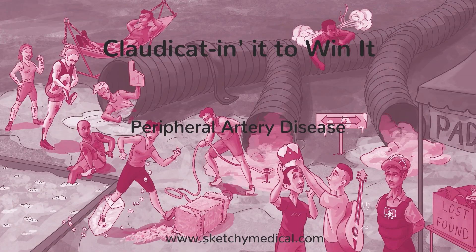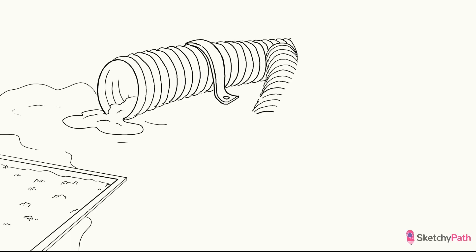In the last sketch, we covered atherosclerotic disease of the aorta and its primary branches. Let's expand our horizons a bit and take a look at more distal branches of the arterial tree. Blockages can occur way out here too, leading to some classic signs and symptoms that should be immediately recognizable on exam.